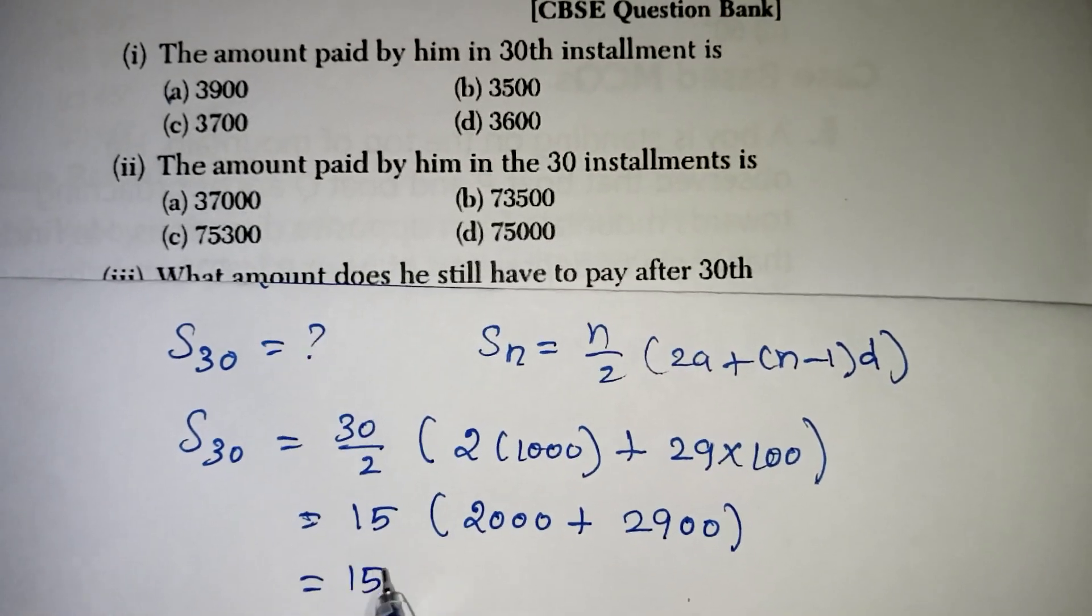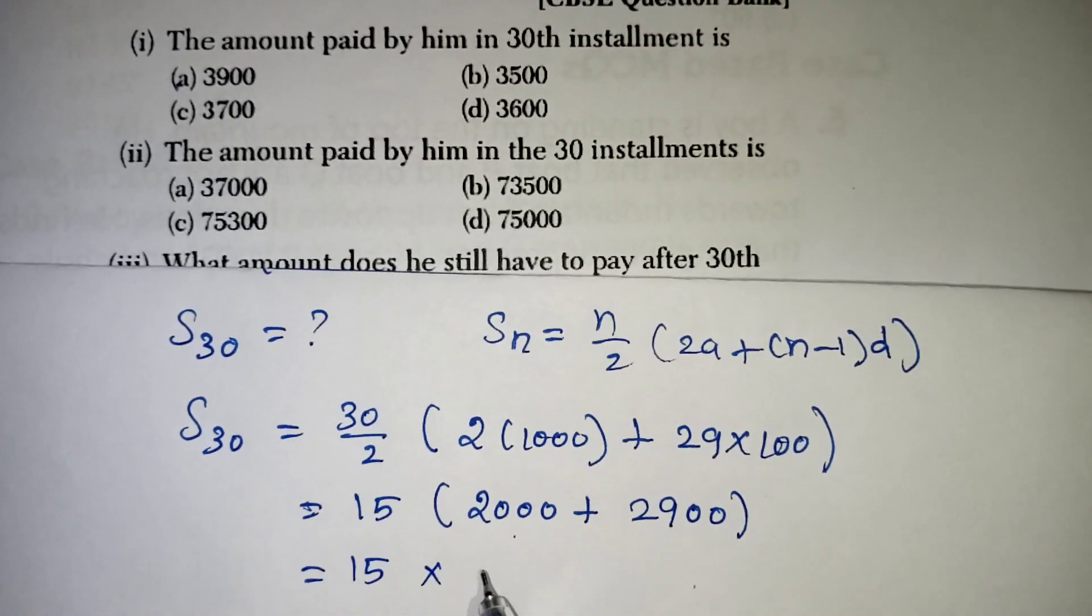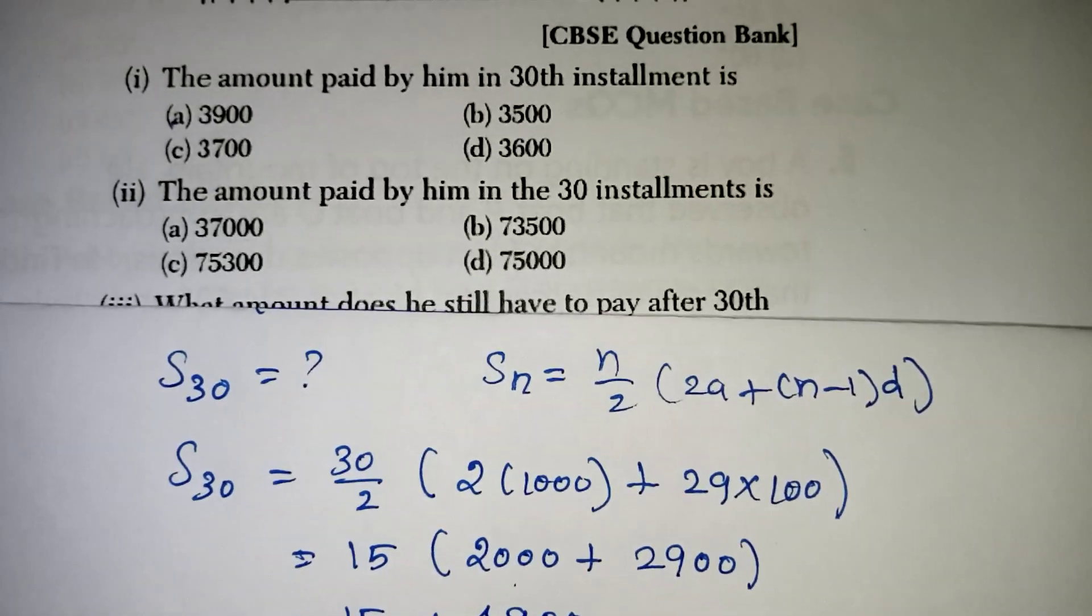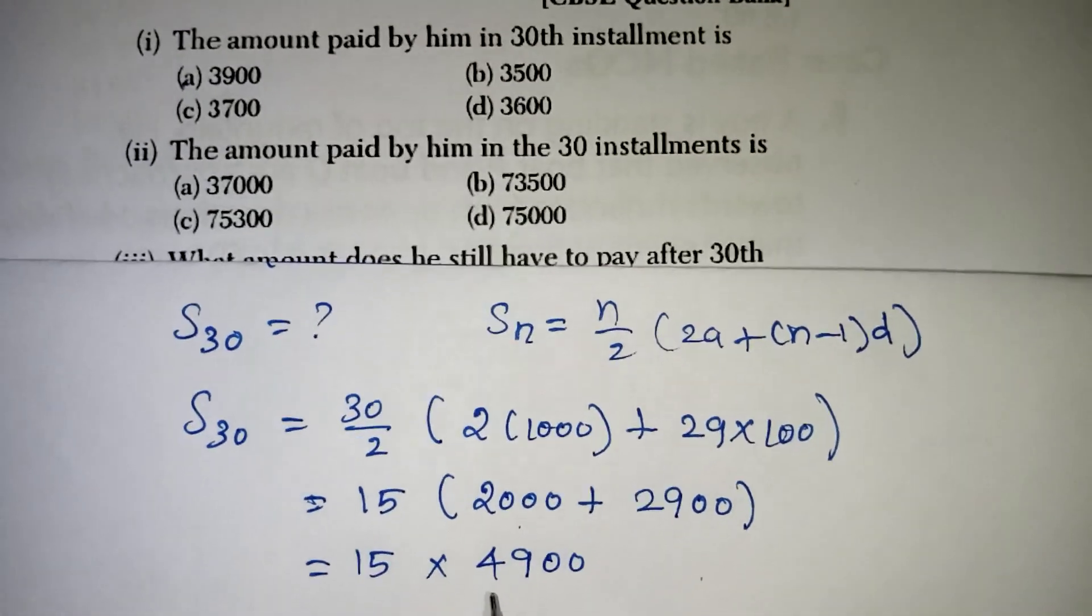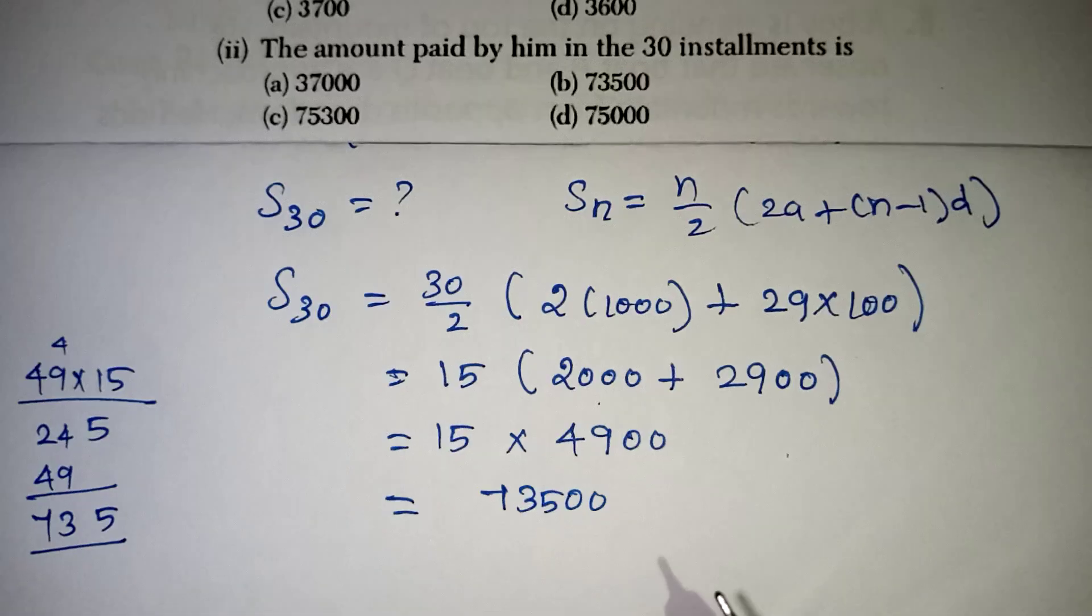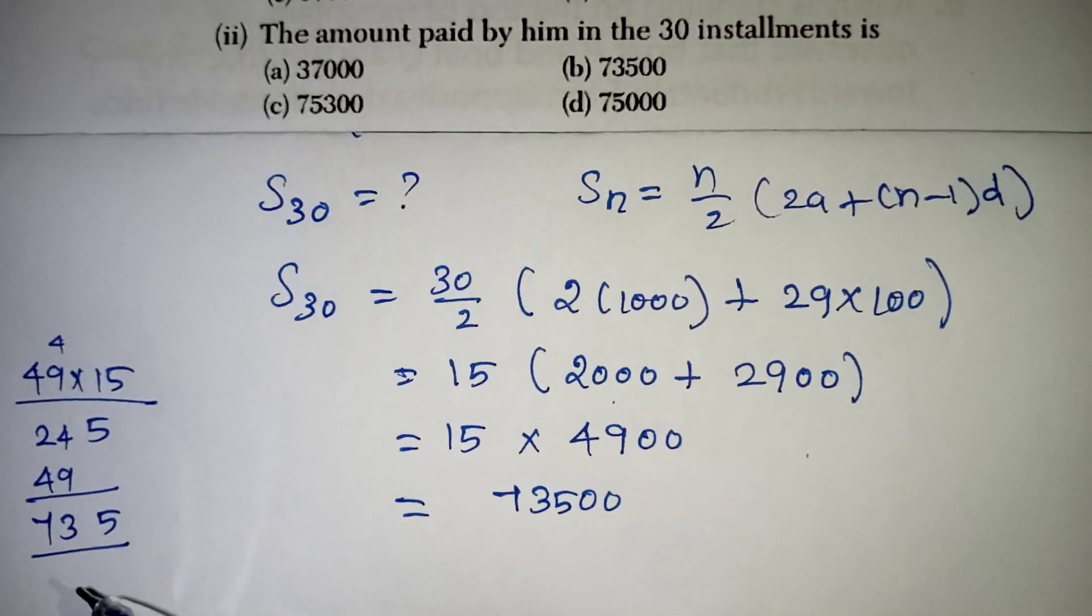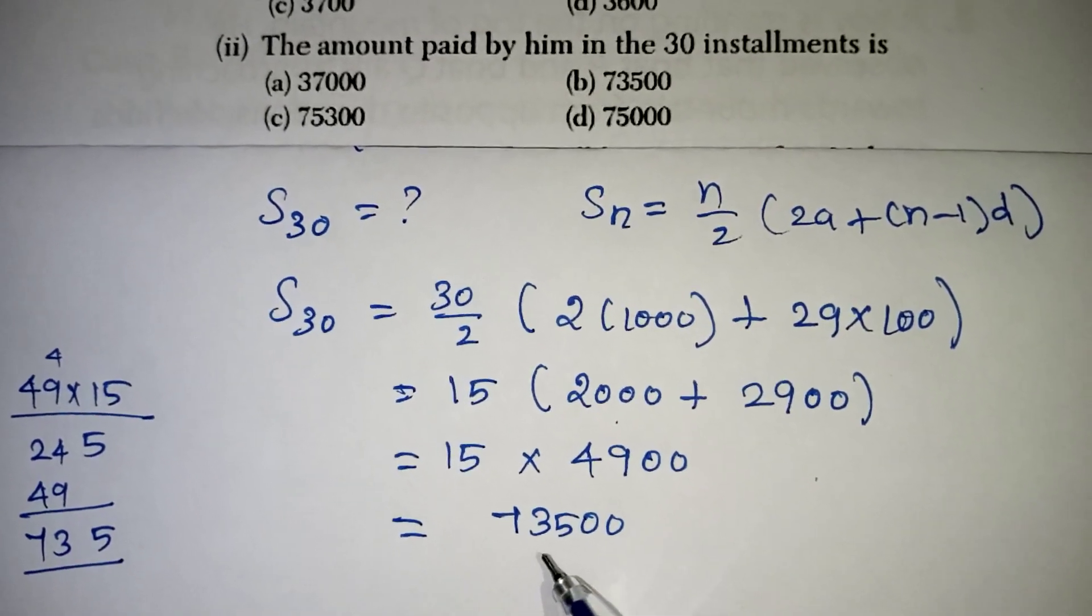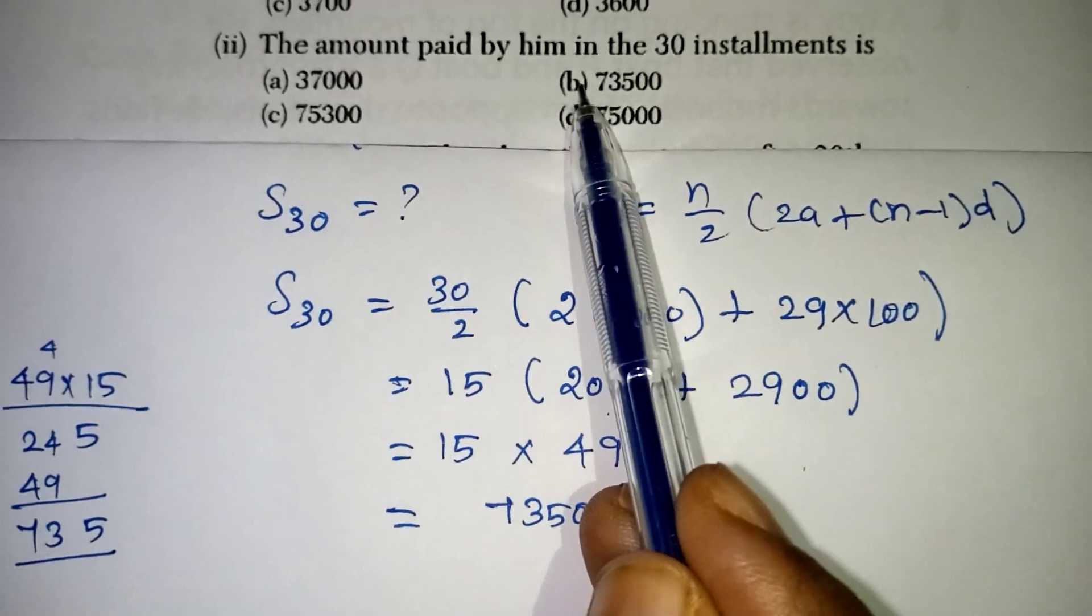Now, let's multiply. 15 multiplied by 2000 and 2900 will be 4900. So, normal multiplication 49 into 50 we can multiply. We are getting 735. So, here two zeros are available. 73500 is your correct answer. That is your B option.